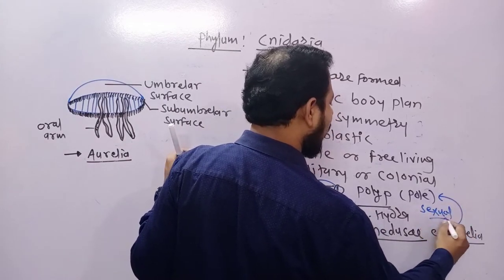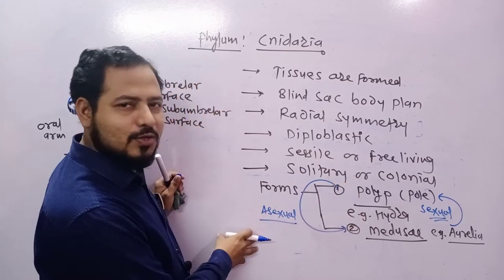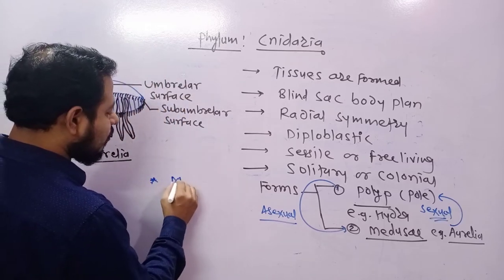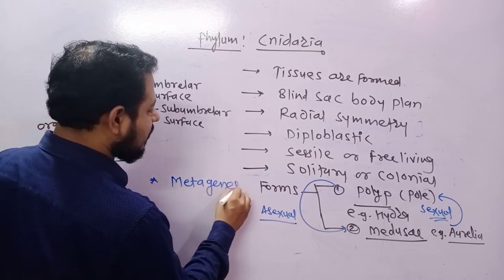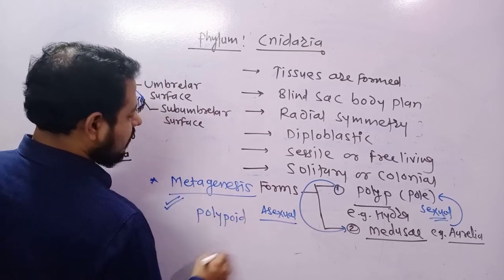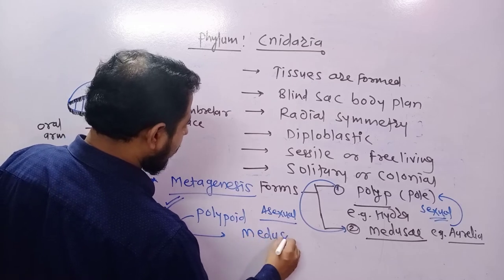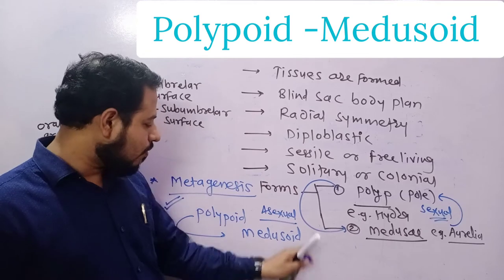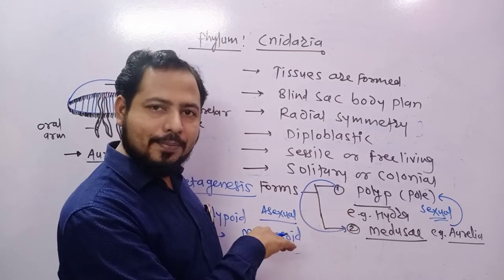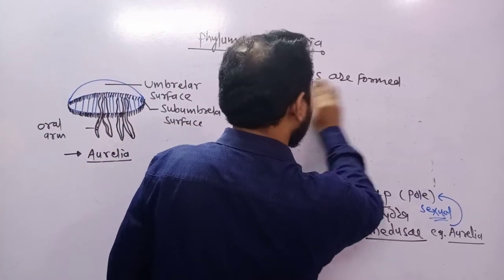This alternation of generation is known by a special terminology called metagenesis. In metagenesis, polypoid forms are converted to medusoid, and medusoid forms are converted back to polypoid. So this alternation from polyp to medusa and medusa to polyp is an important character of this phylum.